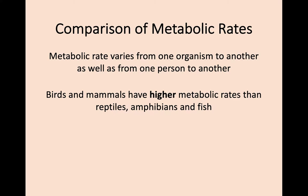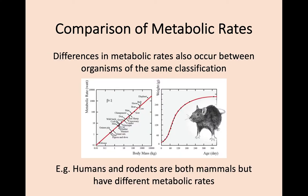For the rest of this key area we're going to look at a comparison of metabolic rates between different organisms, because metabolic rate varies from one organism to another and even from one person to another. We're going to divide things up into birds and mammals versus reptiles, amphibians, and fish. Birds and mammals have higher metabolic rates. Even within these classifications there are differences — for example, humans and rodents are both mammals but have very different metabolic rates.